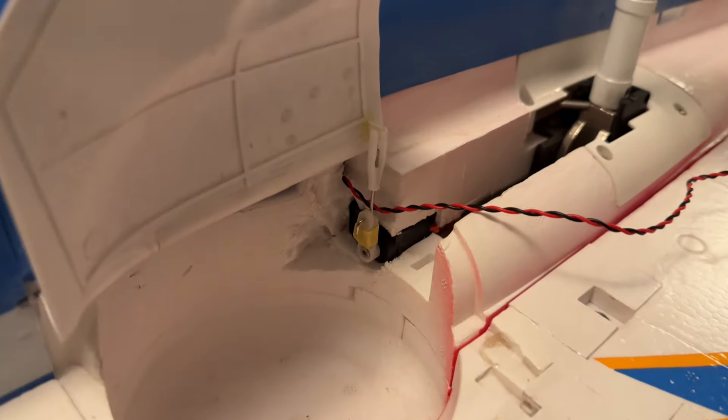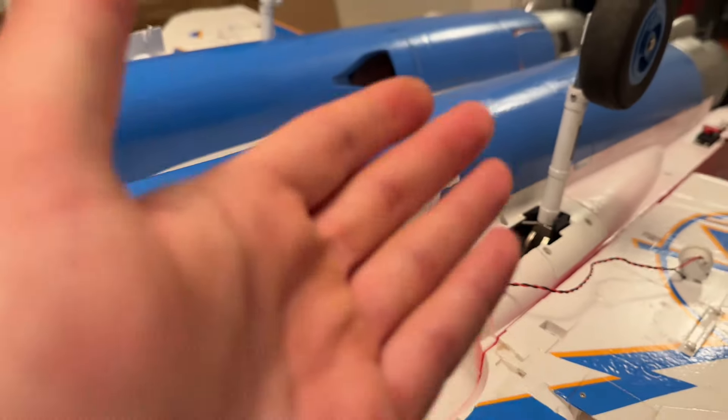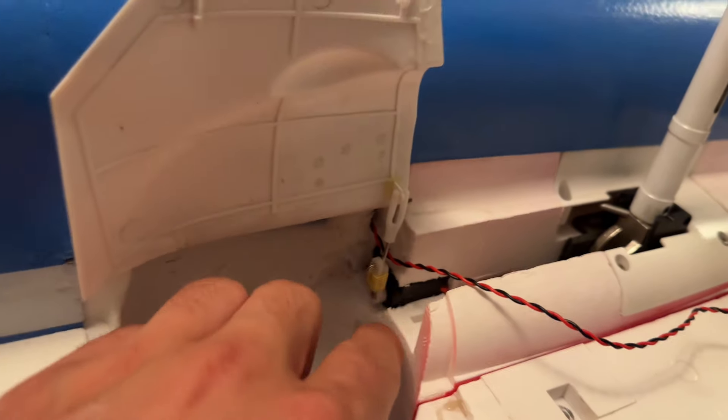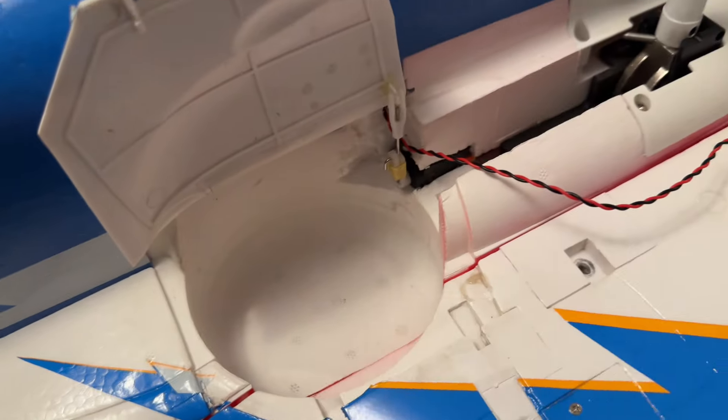Okay, so I've got the servo installed for the door now. Pretty much just epoxied in my own little horn on the inside of the door. Servo's embedded right there. And then the wire feeds through the channel of the retract lead as well, so that's all tucked away there.